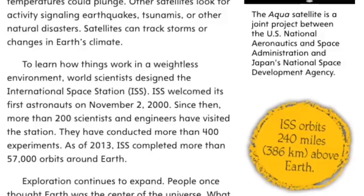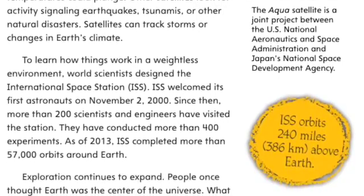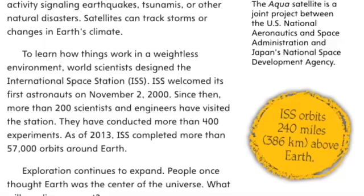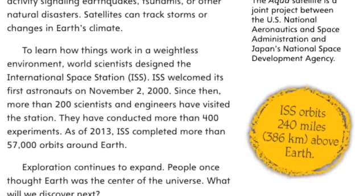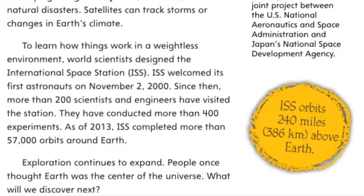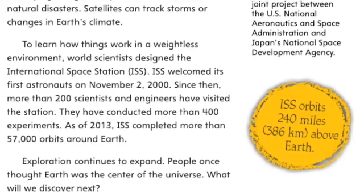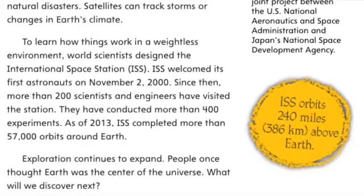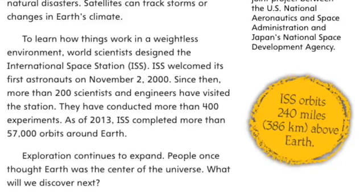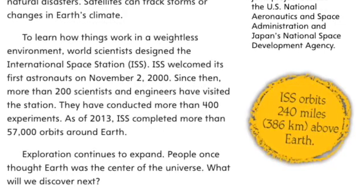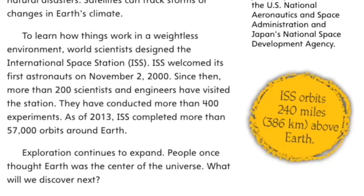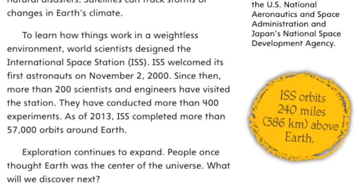Exploration continues to expand. People once thought Earth was the center of the universe. What will we discover next? The Aqua satellite is a joint project between the U.S. National Aeronautics and Space Administration and Japan's National Space Development Agency. ISS orbits 240 miles, or 386 kilometers, above Earth.